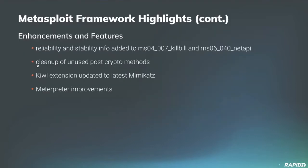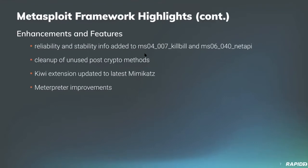Community contributor B. Kohl's added reliability and stability information to the ms04-07 Kill Bill and ms06-40 Net API SMB exploit modules. B. Kohl's also removed some post crypto methods which, as far as we could tell, have never actually been called anywhere in the last 10 years since they were added — back when interpreter scripts were the only way of doing post exploitation. Those functions were added but no one ever used them, so that's about 50 lines of code trimmed out.